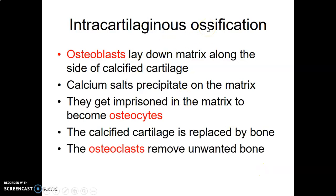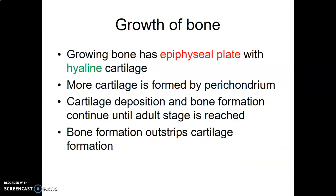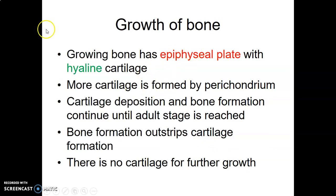In endochondral ossification, osteoblasts lay down matrix along the calcified cartilage. The cartilage passes through resting, proliferative, hypertrophic, and ossification zones. At the ossification zone, osteoblasts lay down matrix and then remain as osteocytes. Osteoclasts remove unwanted bone. Bone grows at the epiphyseal growth plate, which is made of hyaline cartilage covered by perichondrium, but bone formation eventually outstrips cartilage formation.